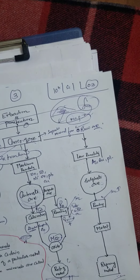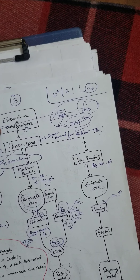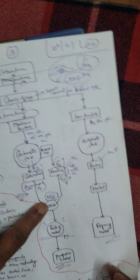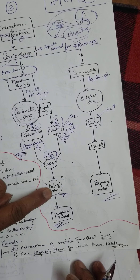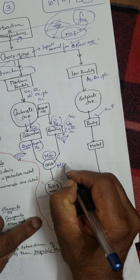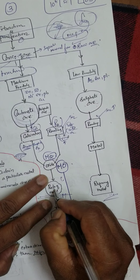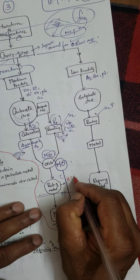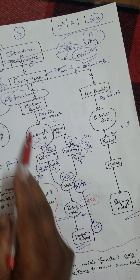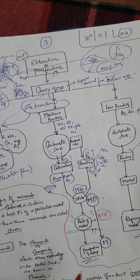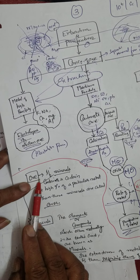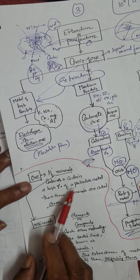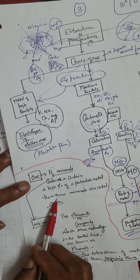These are all multiple choice questions. In the extraction of metal, stages include extraction, purification, and concentration. You get metal oxide in some stages, and by the reduction process you get pure metal. Also, what is an ore? An ore is a mineral from which a metal can be extracted profitably. These minerals are called ores.